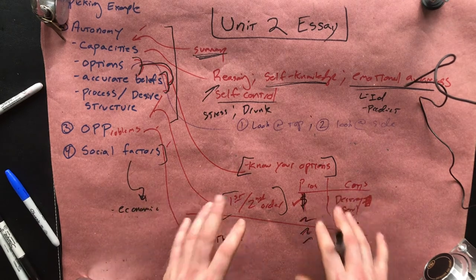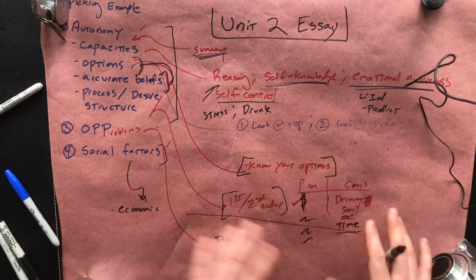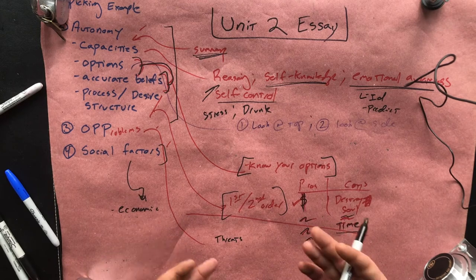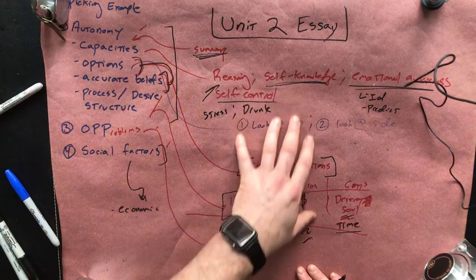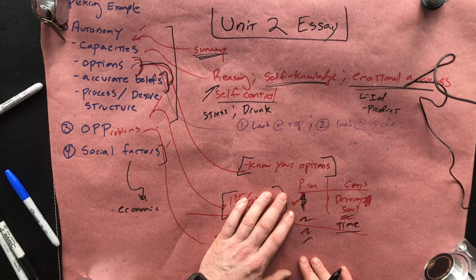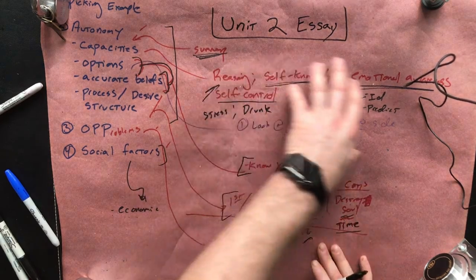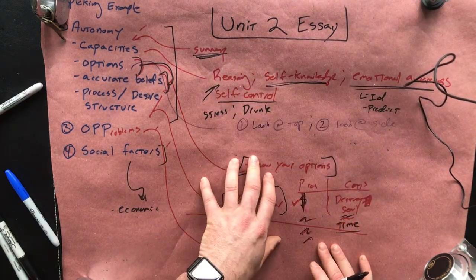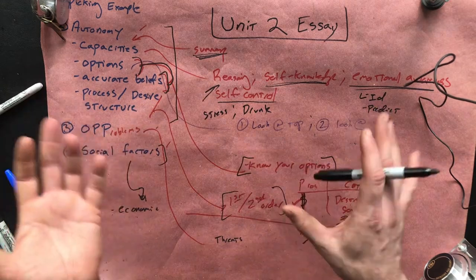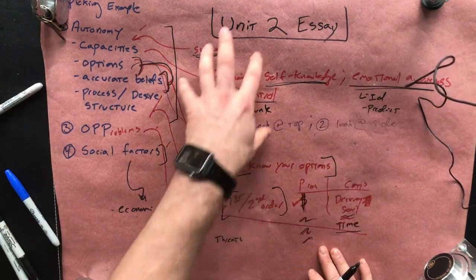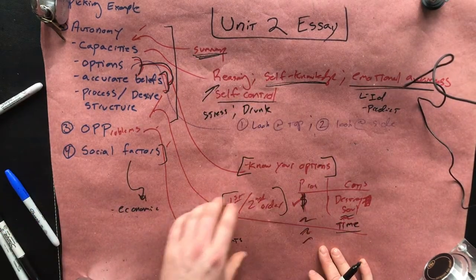Down the road we're going to talk about sales techniques and how salespeople often try to kind of pressure somebody so that they don't think about their options or can't think clearly about what they actually want. There are a lot of ways in which that can happen where you're undermining those capacities.